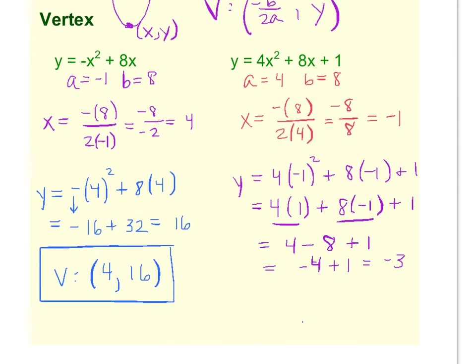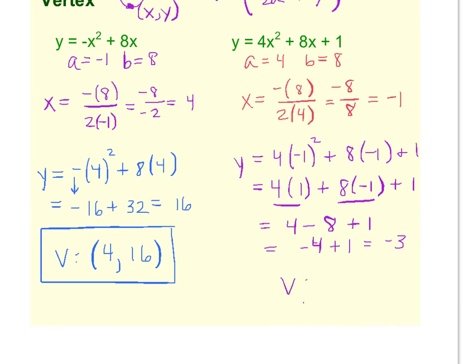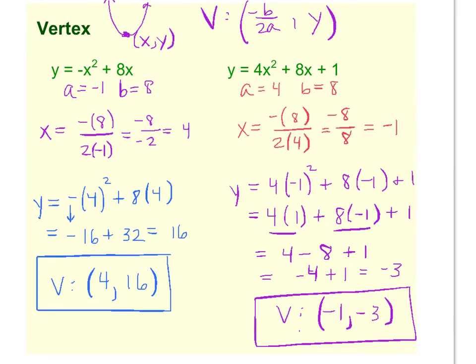So in this case, our vertex will be the ordered pair. Let's see, our x was a negative 1, and the y was that negative 3 that we just got. So to find the vertex, first thing you do is get the x with that negative b over 2a. Once you get your x value, plug it back into the equation to get the y value.